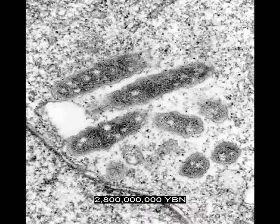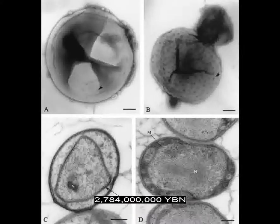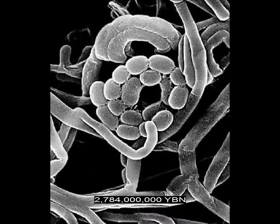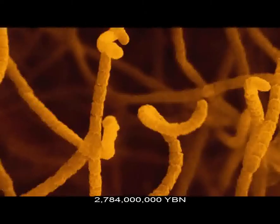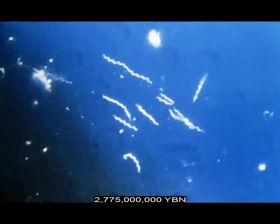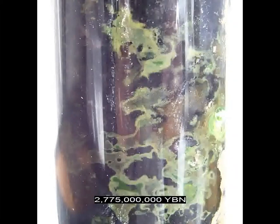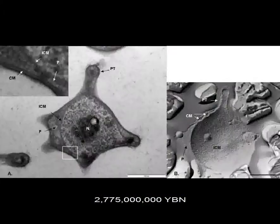Eubacteria Proteobacteria evolve — Rickettsia, ancestor of all mitochondria — gonorrhea, salmonella, E. coli. Gender and sex conjugation evolve in Escherichia coli bacteria. Conjugation is the exchange of DNA plasmids by a donor male bacterium through a pilus to a recipient female bacterium. Eubacteria Planctomycetes, Eubacteria Actinobacteria — gram-positive, source of streptomycin. Eubacteria Spirochetes: syphilis, Lyme disease. Eubacteria Bacteroidetes. Eubacteria Chlamydiae evolve. Eubacteria Chlorobi — green sulfur bacteria. Eubacteria Verrucomicrobia.